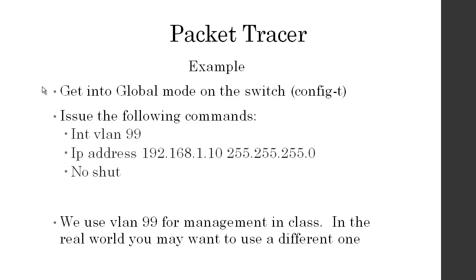From global mode you would type: interface VLAN 99, enter, IP address (the IP address and subnet mask), then no shut, and you're good. We use VLAN 99 for management in this class, but in the real world you may use a different one because 99 is kind of common.